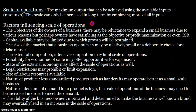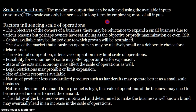Scale of operations is basically the maximum output that can be achieved using the available inputs or resources. This scale can only be increased in the long term by employing more of all inputs. It is the capacity of your business to produce output using the available inputs — the maximum output you can produce with your available inputs.